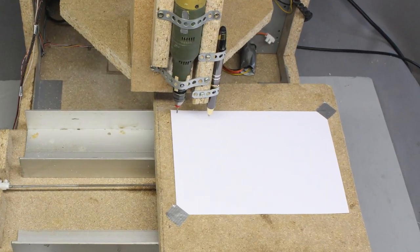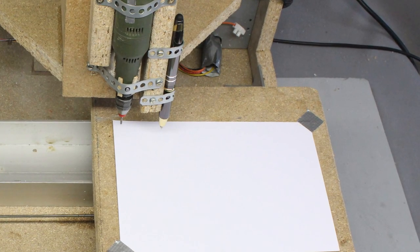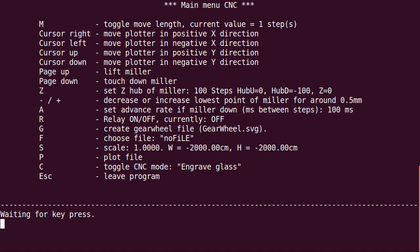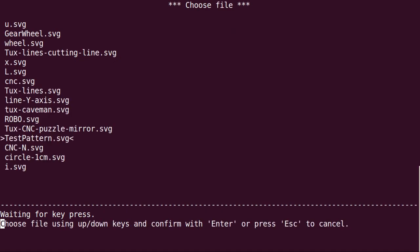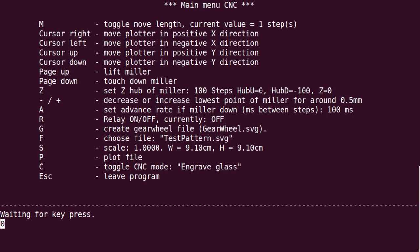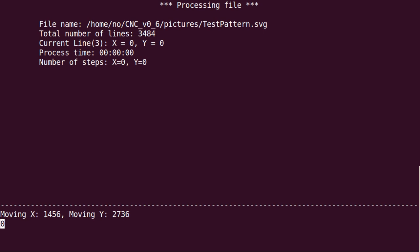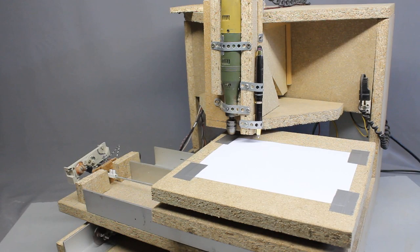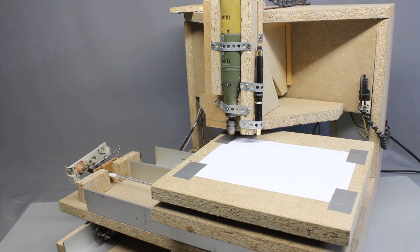So let's plot a test pattern with a ball pen. The software runs on Linux in a terminal window. You can choose a file and set some machine parameters.